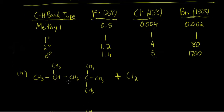The first example we'll be looking at is a chlorination reaction of this alkane. Glancing at it, you can see that there are methyl, secondary, and tertiary hydrogens present. There are equivalent methyl hydrogens at these two carbons — they're equivalent to one another because they're both bound to this tertiary carbon. So between them there are six equivalent primary hydrogens.